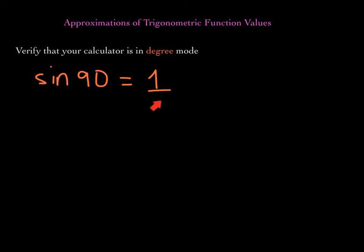Sine of 90 degrees is 1. If you're not getting 1, that means your calculator is not in degree mode, and you want to make sure to change it. Many times students will get an answer incorrect because their calculator is in a different mode — for example, radian mode. We want to make sure that we're in degree mode for the current lessons; eventually we will change to radian mode and define what that means in a later lesson. So as of right now, we're talking degrees — confirm you're in degree mode, please.